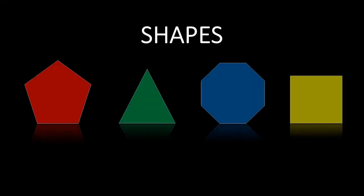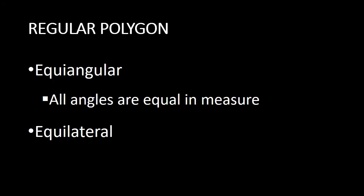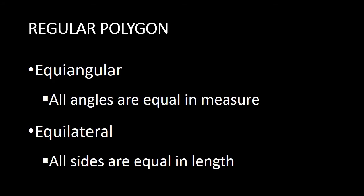Shapes. Regular polygon. Equiangular — all angles are equal in measure. Equilateral — all sides are equal in length.